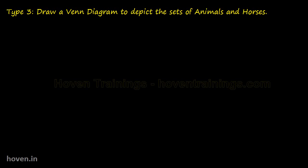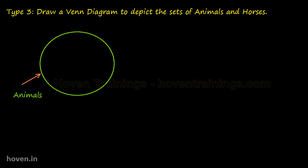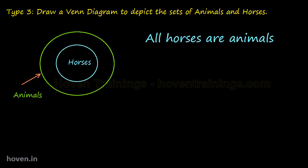Draw a Venn diagram to depict the sets of animals and horses. Here we have to draw a Venn diagram to represent the sets of animals and horses. Let us draw a circle for the animals. But here we have to observe that all horses are animals — this set of horses is entirely contained in the set of animals. We can see that in this case there is no partial overlap, so we can put the entire set of horses inside the set of animals. In the terminology of sets, we say that the set of horses is a subset of the set of animals.